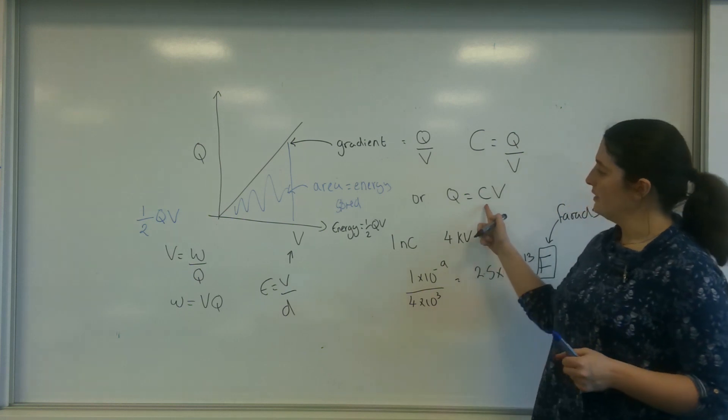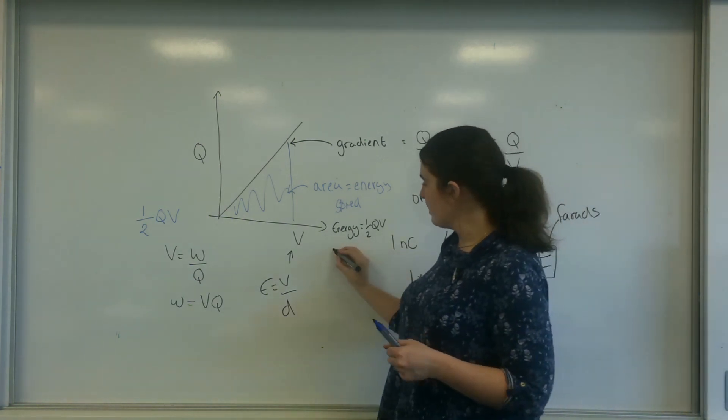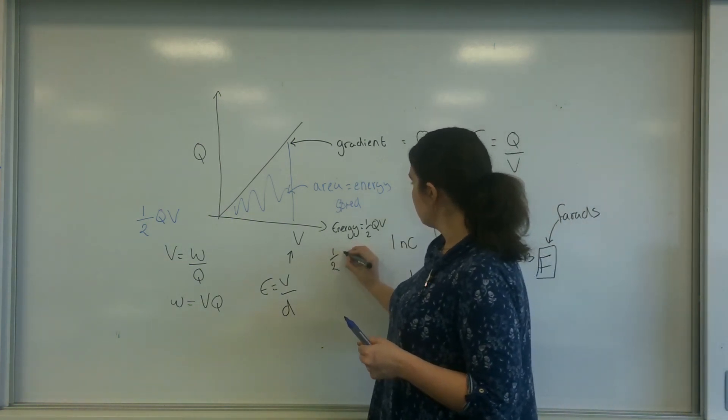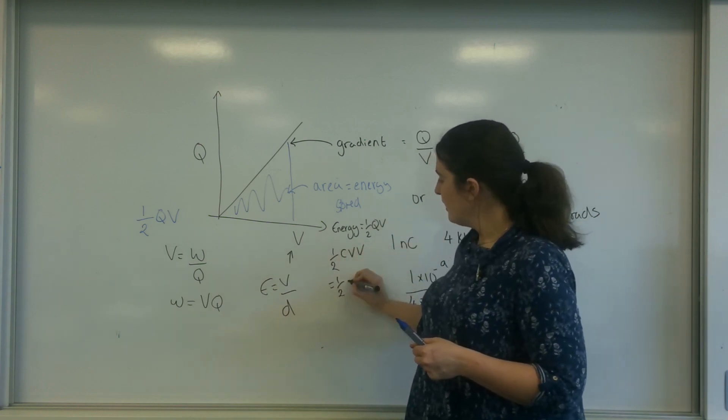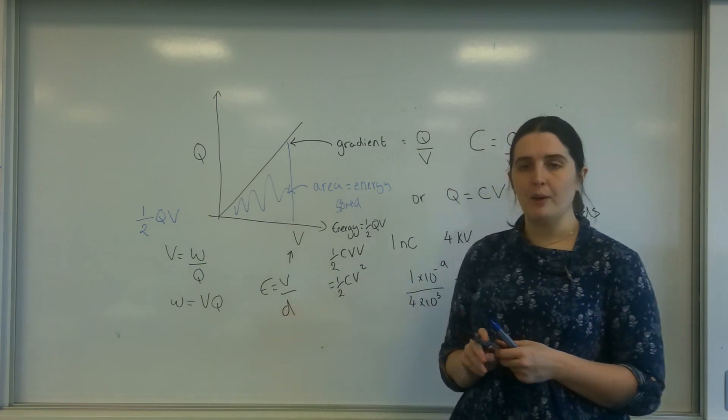But I'm going to replace it with this as well. So energy is a half Q times CV times V. So it's a half CV squared as well.